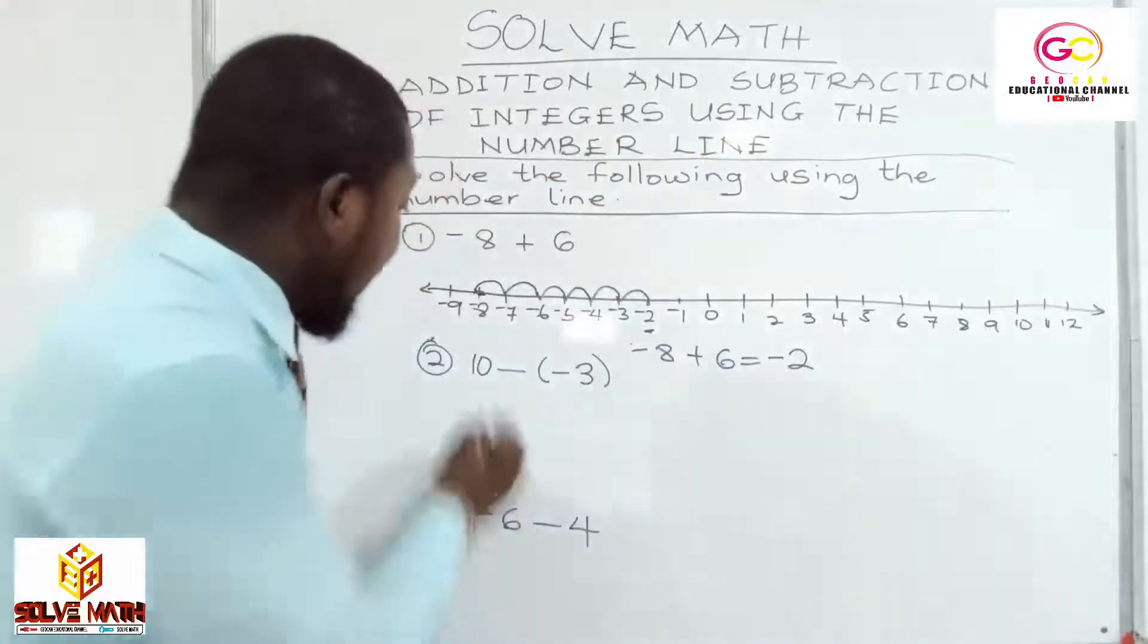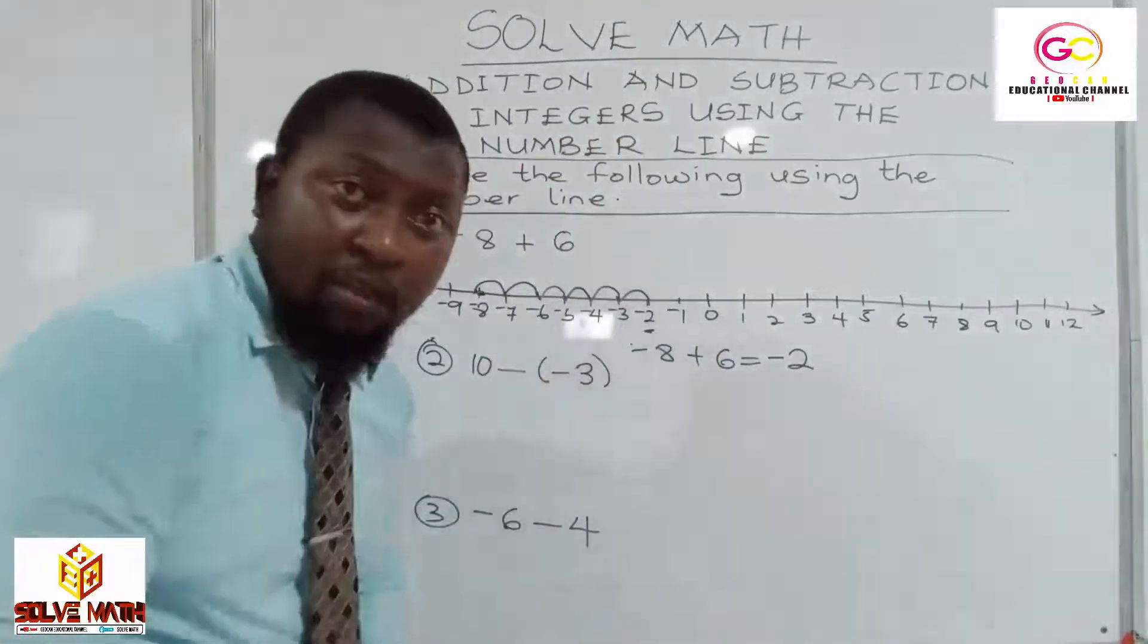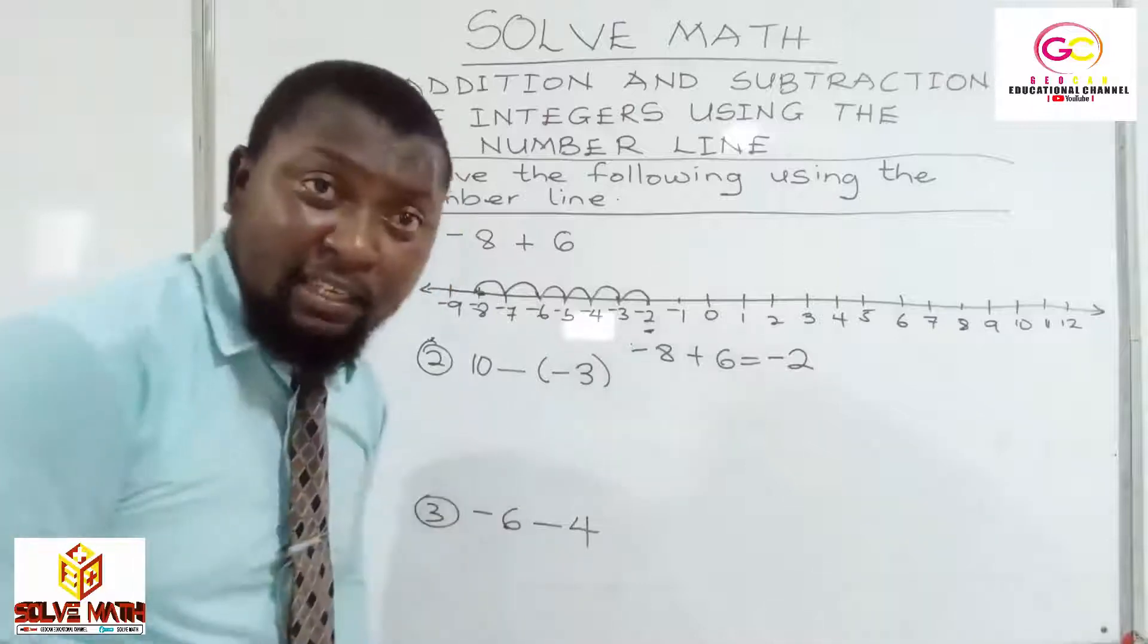Here, what do we have? We have 10 minus negative 3. 10 minus negative 3.